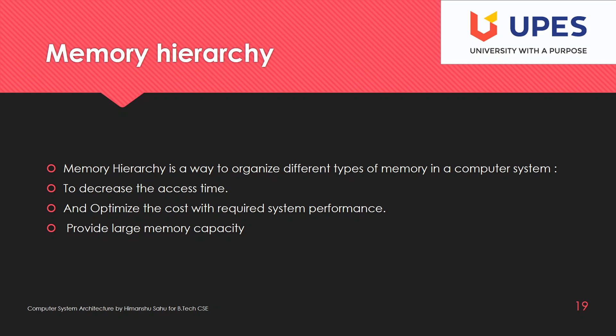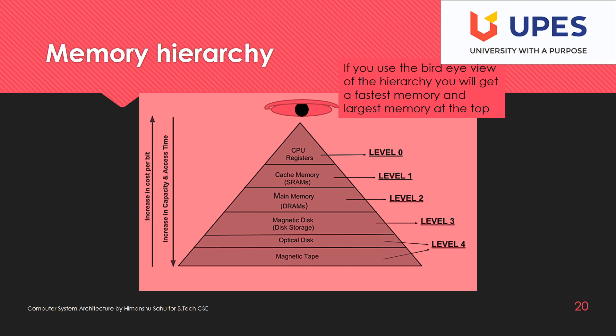Based on these three goals we have devised this pyramid arrangement. If you take a bird's-eye view of this particular memory hierarchy, you will get the fastest memory and the largest memory. At the top of this hierarchy you have the CPU registers, and whenever you need data it may be available in magnetic tape.